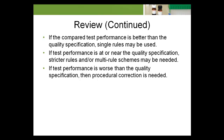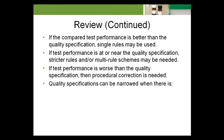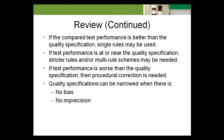If test performance is worse than the quality specification, then procedural correction is needed. Quality specifications can be narrowed when there's no bias, no imprecision, and a lot of white space on the TE plot.